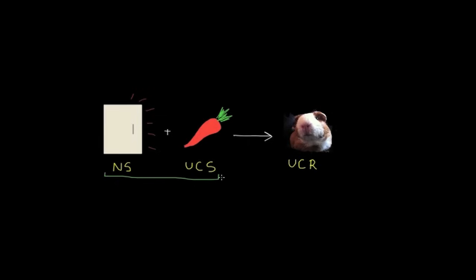And classical conditioning actually occurs when the neutral stimulus, in our case the sound of the refrigerator door, is able to elicit the same response as the unconditioned stimulus, the carrot. So in our example, we can say classical conditioning had taken place when the sound of the refrigerator door alone was enough to cause excitement, even if she didn't receive the carrot.